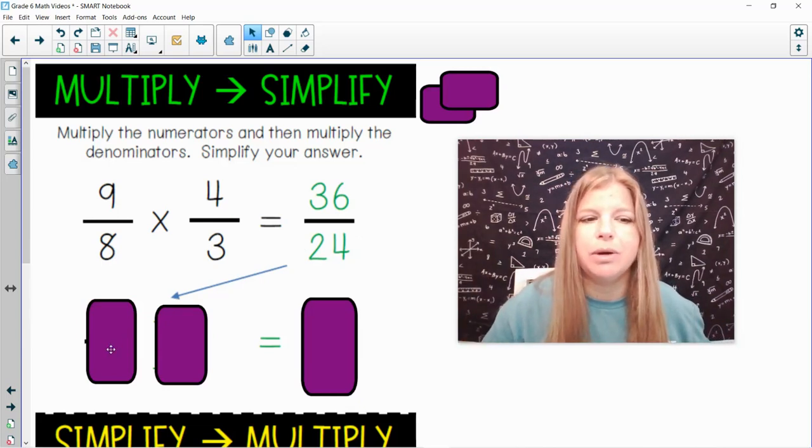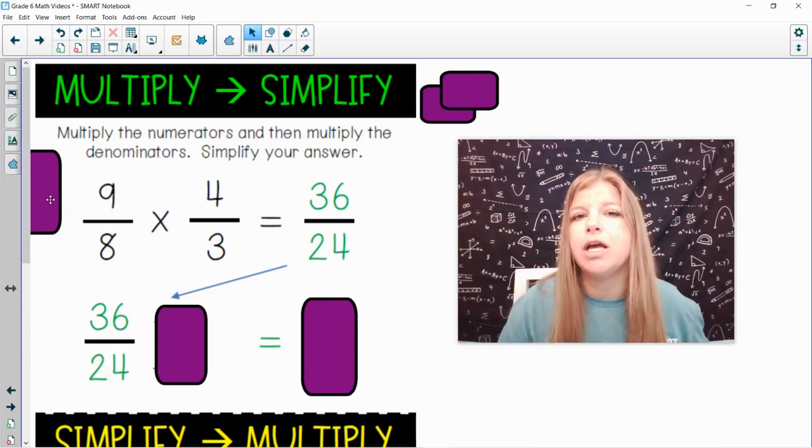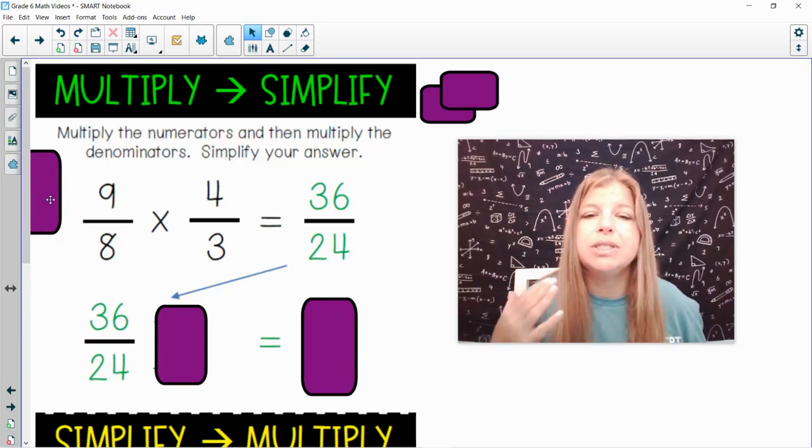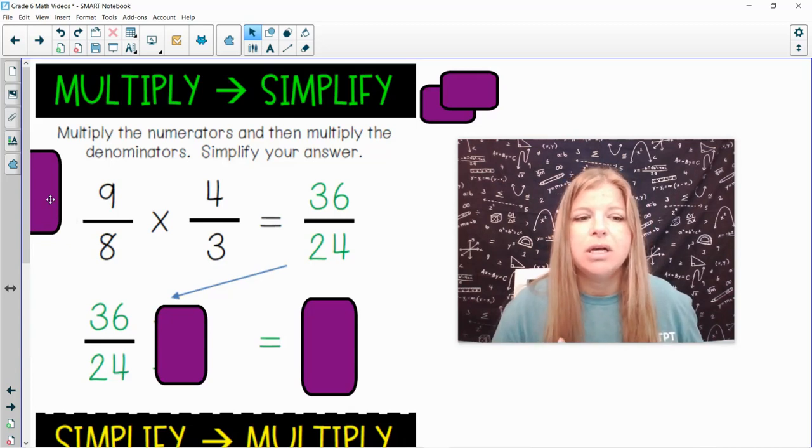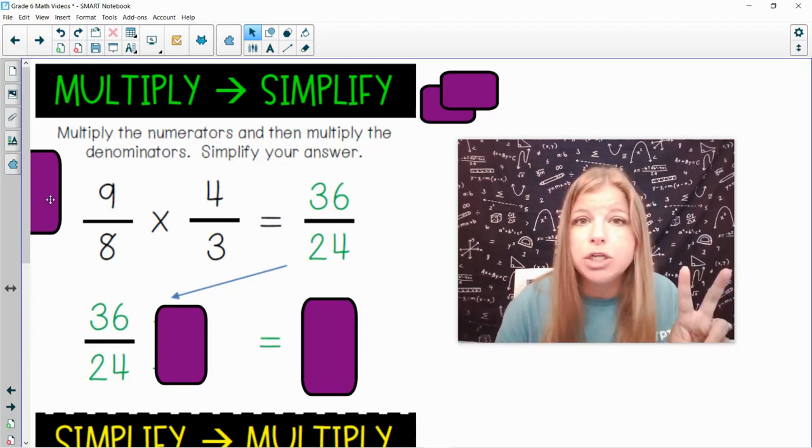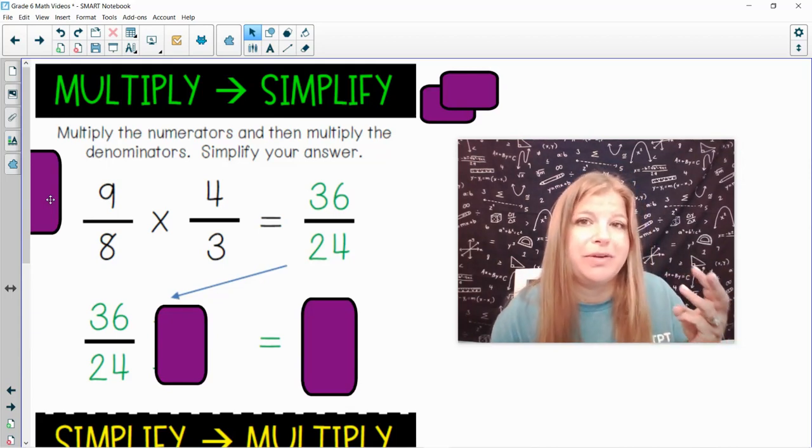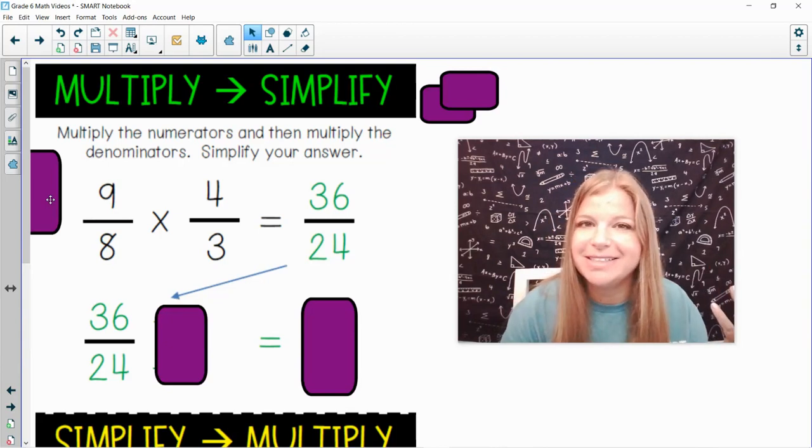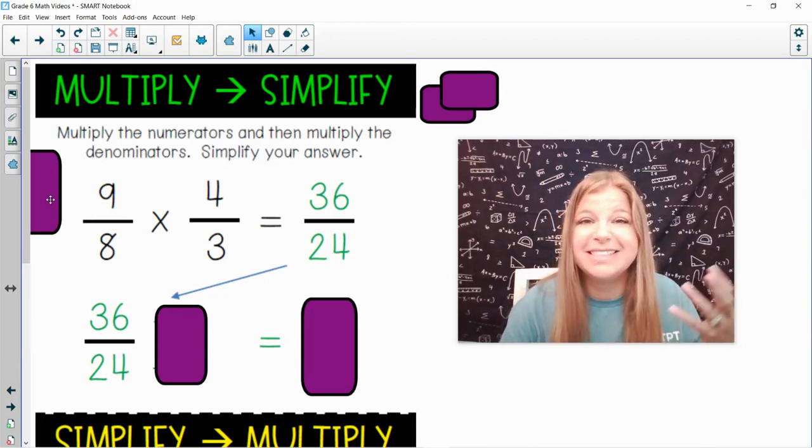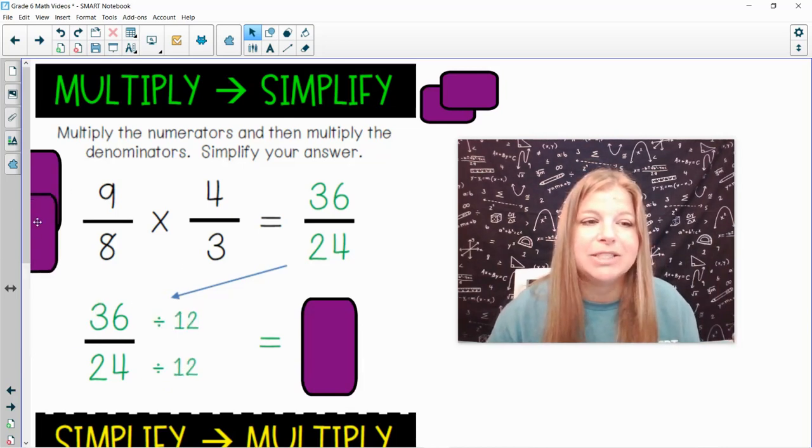Now, 36 over 24, we could definitely simplify that. And remember, when you're simplifying, you want to simplify down using the greatest common factor. I could look at 36 and 24 and say they're both divisible by 2. It's not the greatest. I could divide them both by 3, but it's not the greatest. 4, 6. It's actually a factor that's even bigger. And that factor that they both have in common is 12.